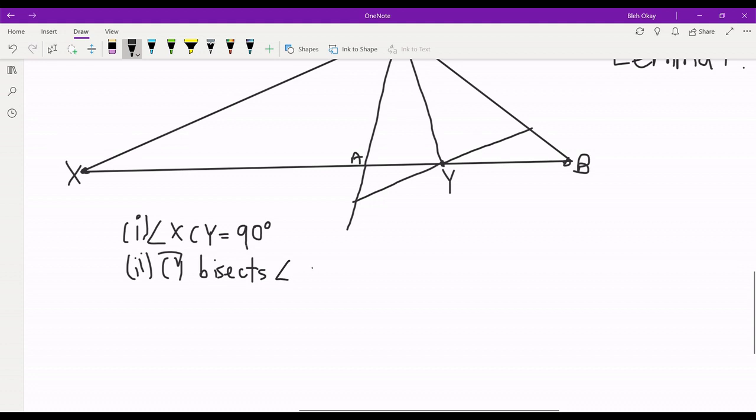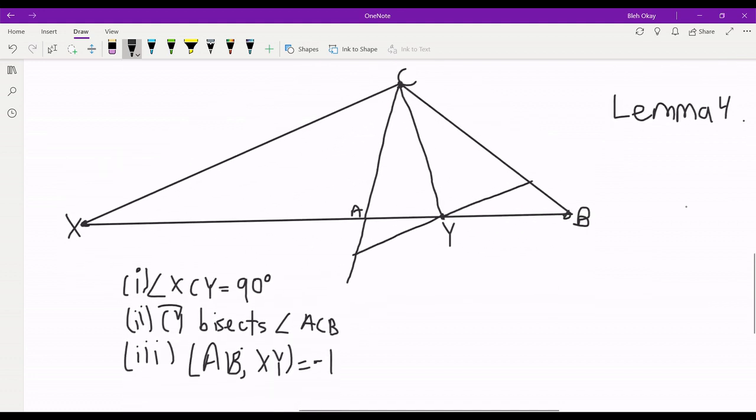Condition two is that CY bisects the angle ACB. And the third condition is that AB cross XY is once again negative one, so we have a harmonic bundle.